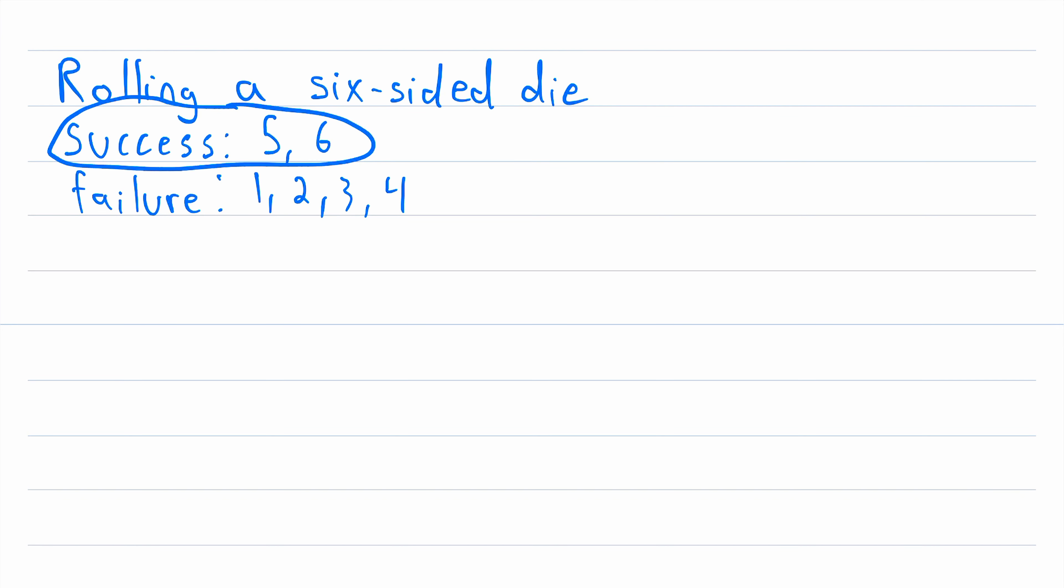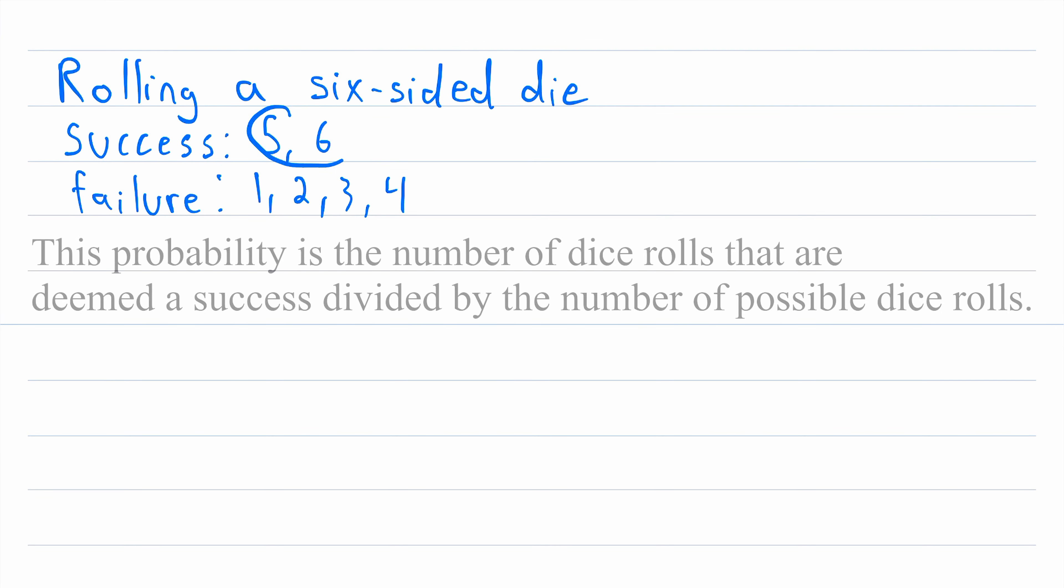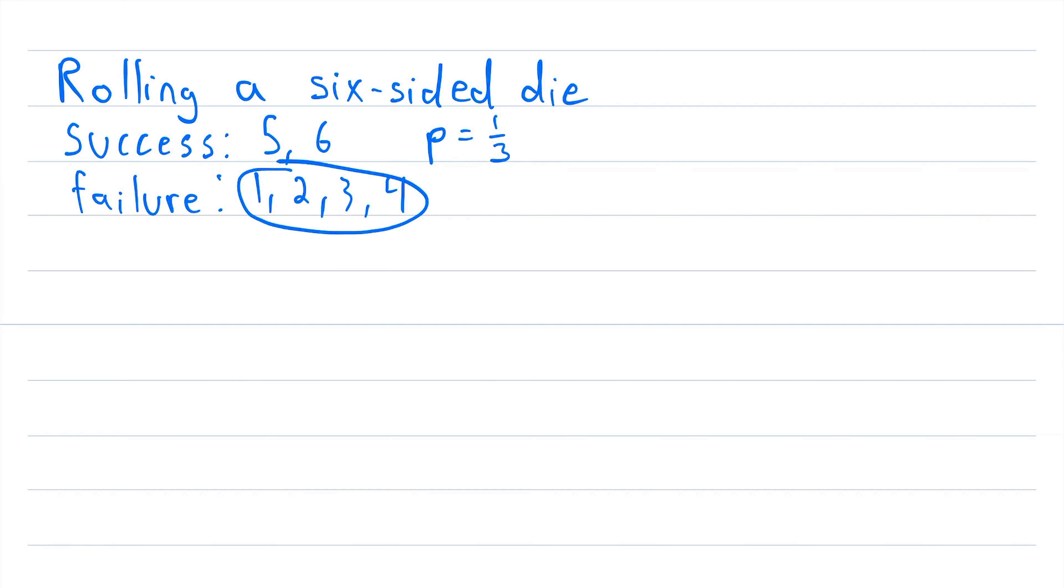In this case, the probability p of success is two divided by six, which is just one over three. And q, the probability of failure, is four divided by six, which is two over three.